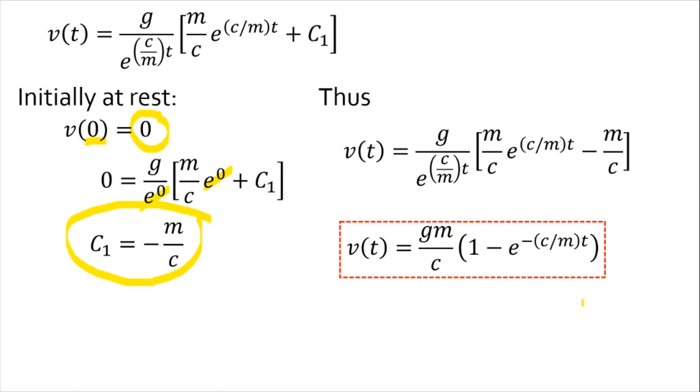Our solution is therefore v as a function of t is equal to gm over c times the quantity 1 minus e to the negative c over m times t. This is our solution of the differential equation.